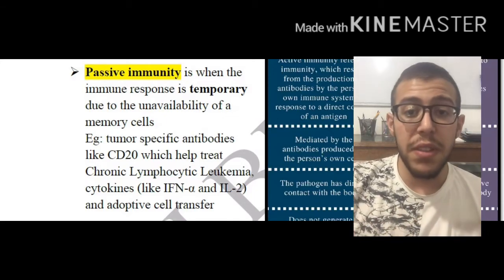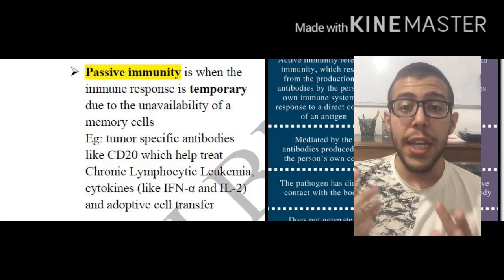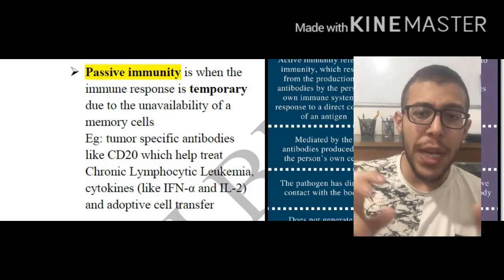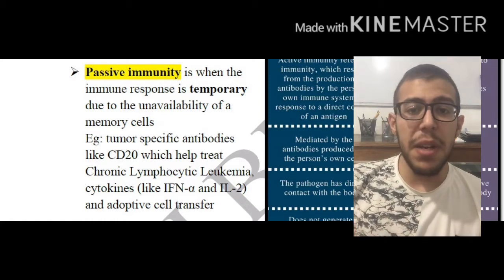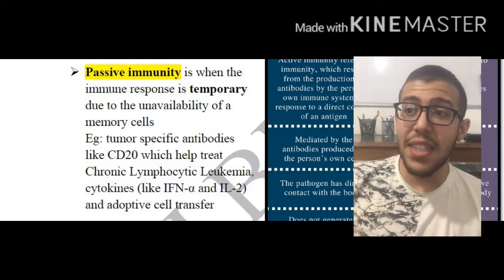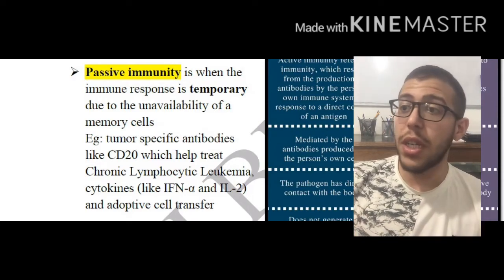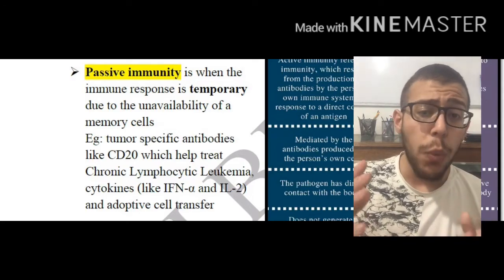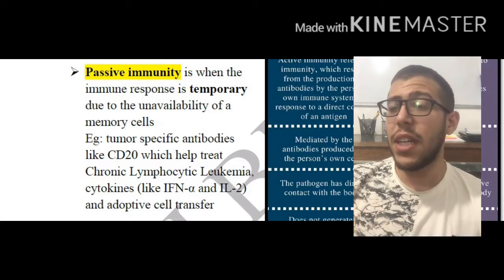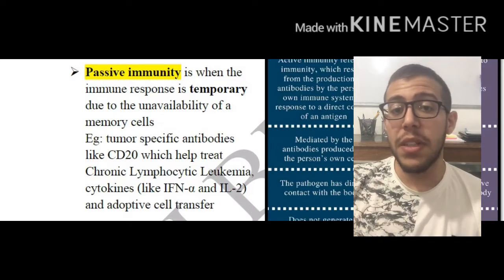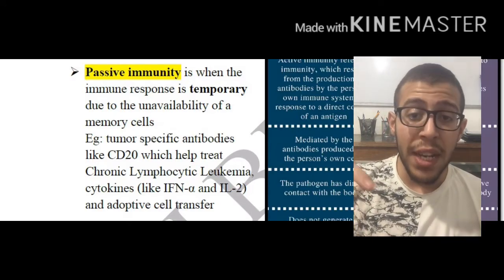Memory cells are the ones that induce a quick response whenever we get exposed to a previously known antigen, and in passive immunity we do not have that. Some examples include tumor-specific antibodies like CD20 which help treat chronic lymphatic leukemia, cytokines including interferon alpha and interleukin-2, and also adoptive cell transfer which we'll be discussing in a later video in this playlist.